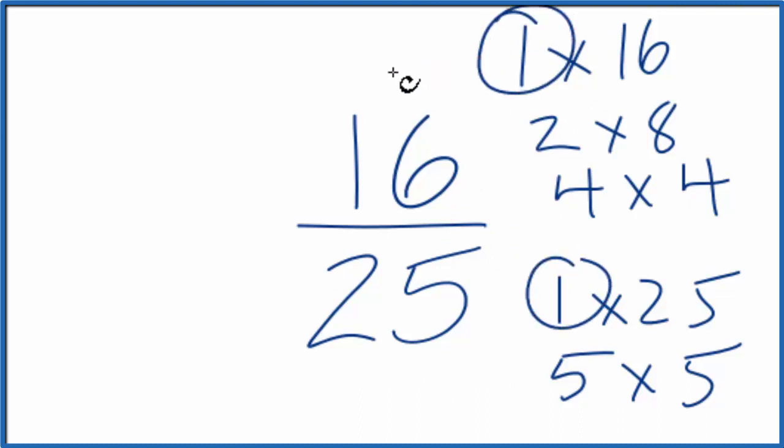So this is actually in its lowest form. It's already simplified. You can't reduce this fraction here, 16/25, any further. So that's it. When we try to simplify 16/25, we get 16/25.